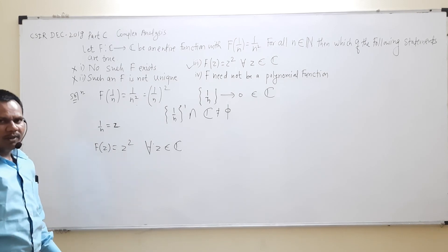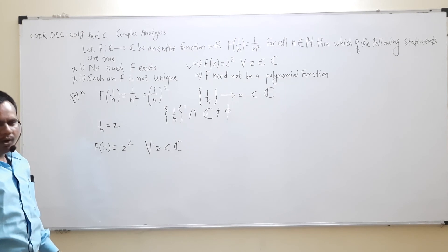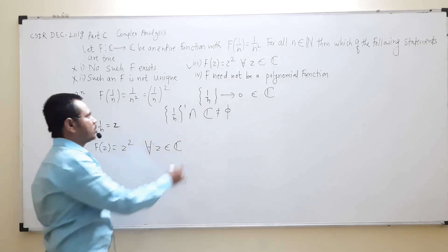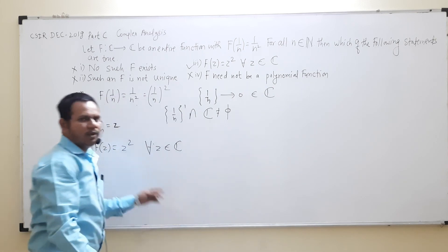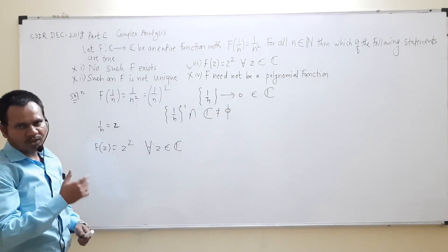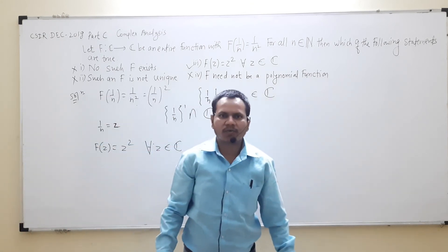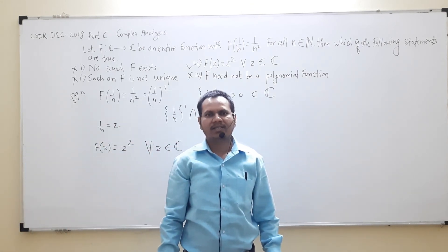And the fourth option: f need not be a polynomial. Now here we are getting a polynomial. z² is a polynomial, and the fourth option is saying that f need not be a polynomial. Therefore this option is wrong. Here we are getting a polynomial and the option is saying that this is not a polynomial. Thank you for watching. If you like this video, please like, share, and comment.